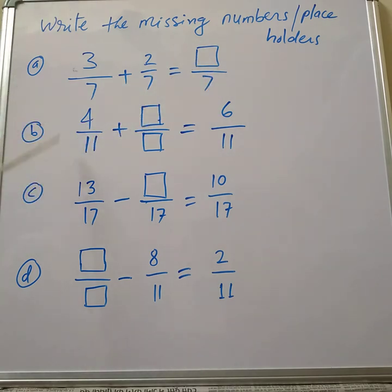Next one, the fraction given is 4 by 11. The next fraction is not given, but the sum of these two fractions equals 6 by 11. See here, in this answer 6 by 11, 11 is the denominator.